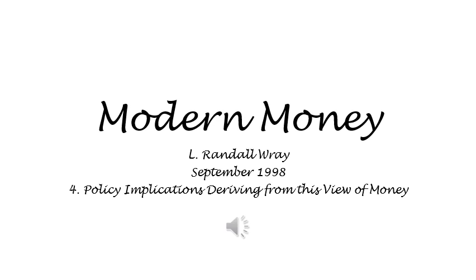He went on to list two laws of functional finance. Quote: "The first financial responsibility of the government, since nobody else can undertake that responsibility, is to keep the total rate of spending in the country on goods and services neither greater nor less than that rate which at the current prices would buy all the goods that it is possible to produce." When spending is too high, the government is to reduce spending and raise taxes. When spending is too low, the government should increase spending and lower taxes. An interesting corollary is that taxing is never to be undertaken merely because the government needs to make money payments. Taxation should therefore be imposed only when it is desirable that the taxpayers shall have less money to spend.